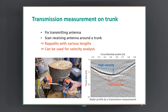If the trunk has a higher velocity, the concave becomes shallower, like the blue line, and if the velocity is lower, it gets deeper, like the red line. So applying velocity analysis, commonly used for CMP data, and by evaluating the curve shape, we can estimate the velocity.